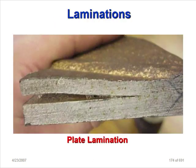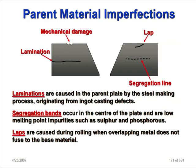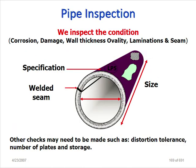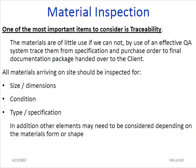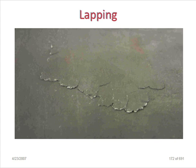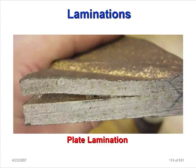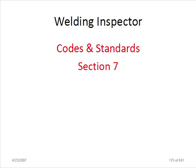This is the defect overview - this is how to do metal inspection at site. This completes Section 6. Section 7 will also be completed today.